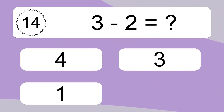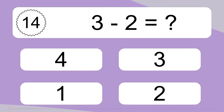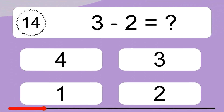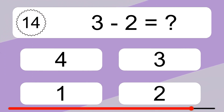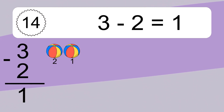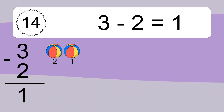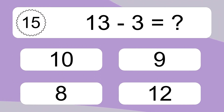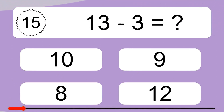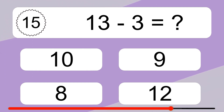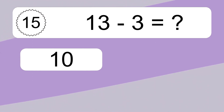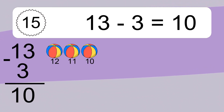3 minus 2 equals what? 3 minus 2 equals 1. Let's count it: 2, 1. 13 minus 3 equals what? 13 minus 3 equals 10. Let's count it: 12, 11, 10.